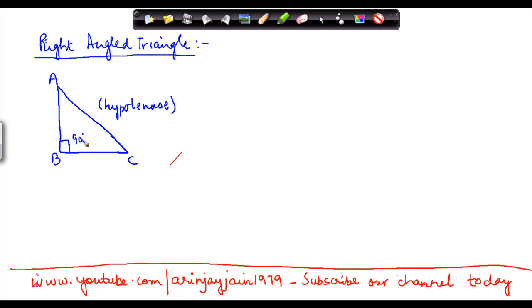Now in case of a right angled triangle, suppose there is another right angled triangle and this is a hypotenuse. In a right angled triangle...